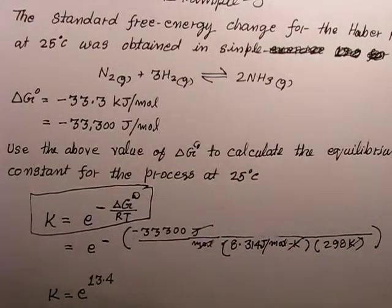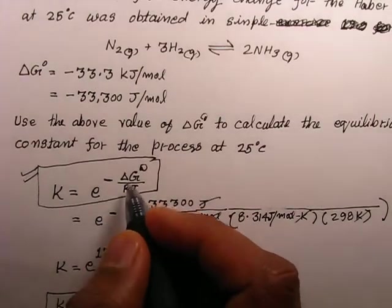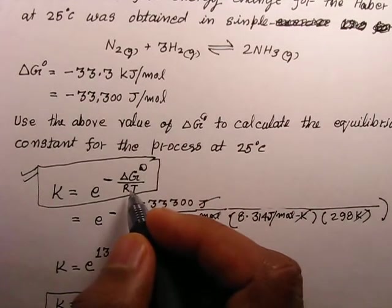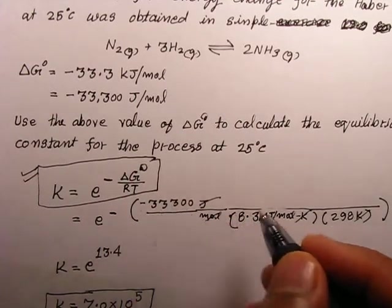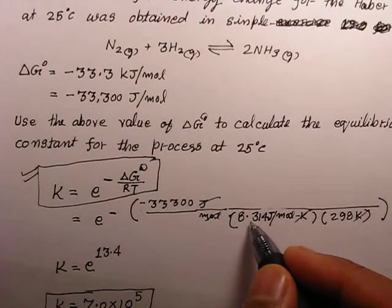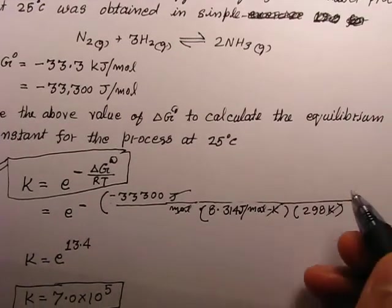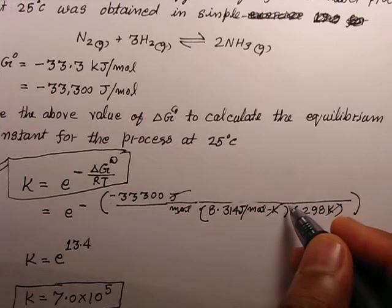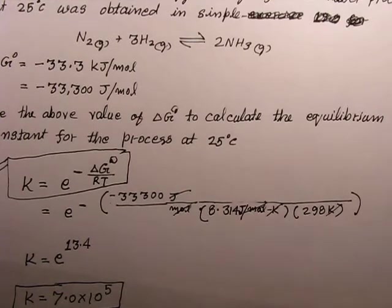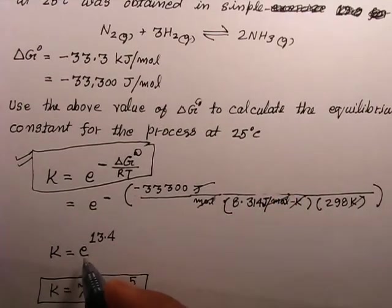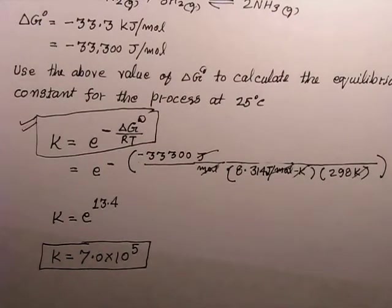To calculate K from delta G°, we use K = e^(−ΔG°/RT). Placing values in: negative delta G° divided by R (8.314 J/mol·K) times T (298 K) — Kelvin cancels, and joules per mole also cancel. Solving gives K = e^(13.4), from which we can calculate the final K value.